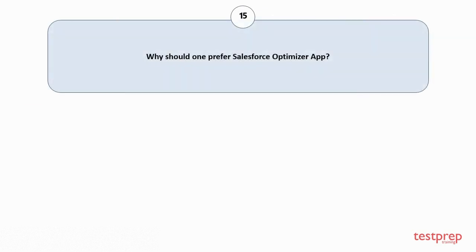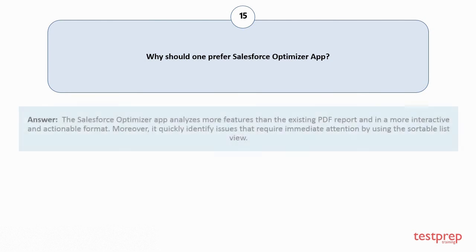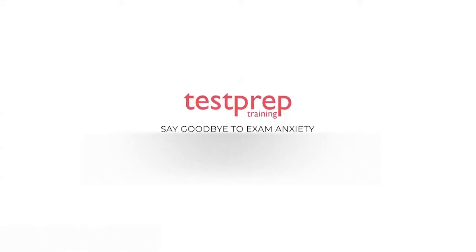Question number fifteen: Why should one prefer the Salesforce Optimizer app? The Salesforce Optimizer app analyzes more features than the existing PDF report and in a more interactive and actionable format. Moreover, it quickly identifies issues that require immediate attention by using the sortable list view. For more such videos, subscribe to our channel.